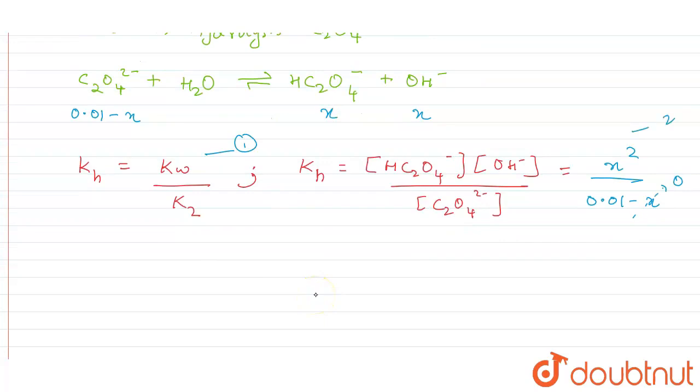Now, if this is reaction one and this is reaction two, I can equate reaction one and two. One is equal to two because we have Kh for both. So this becomes Kw upon K2 is equal to x² divided by 0.01.